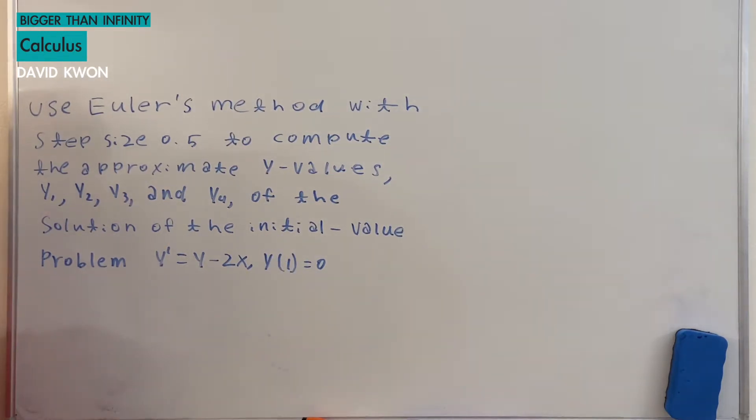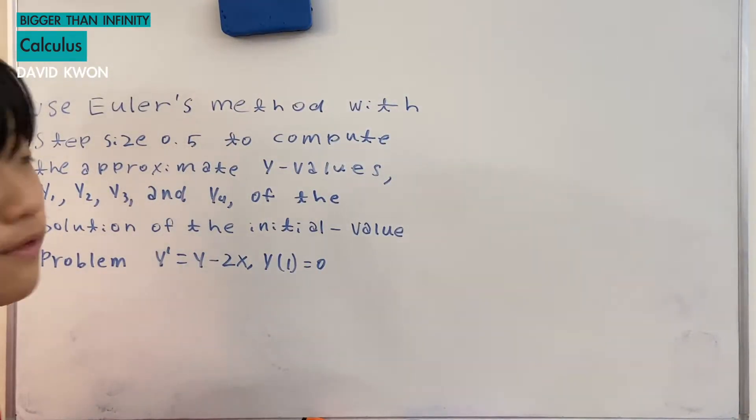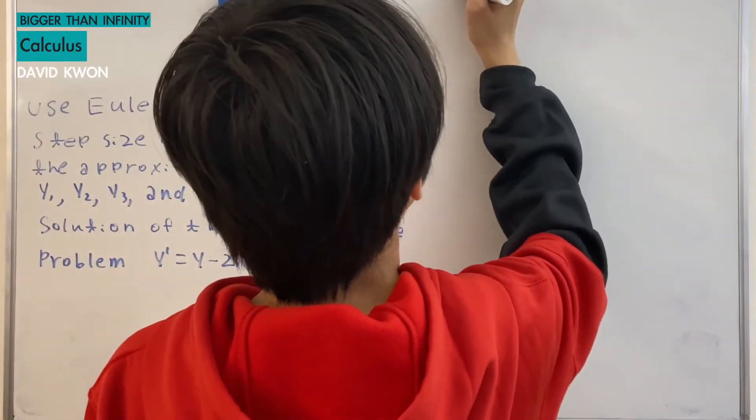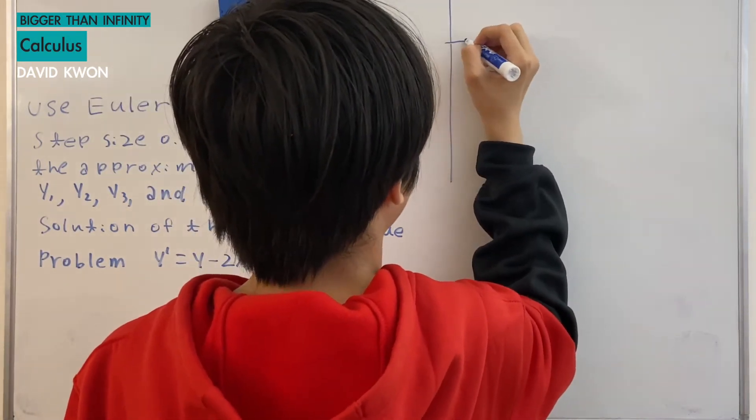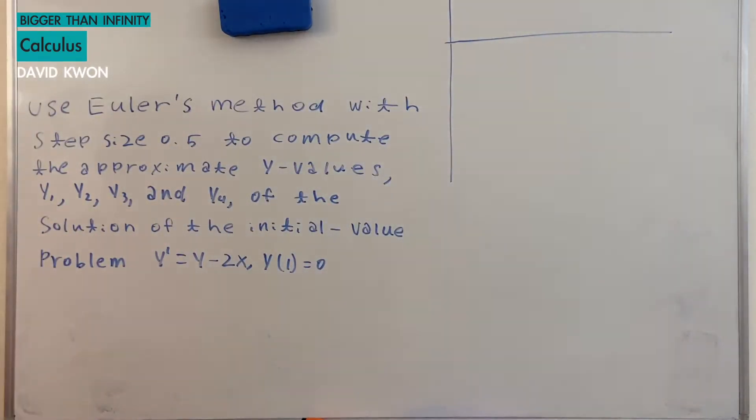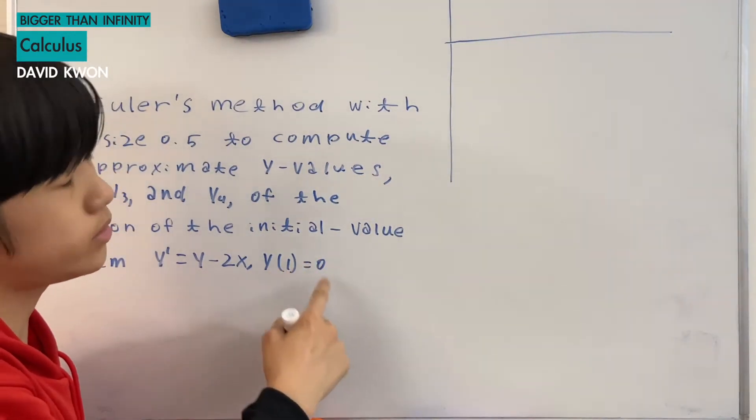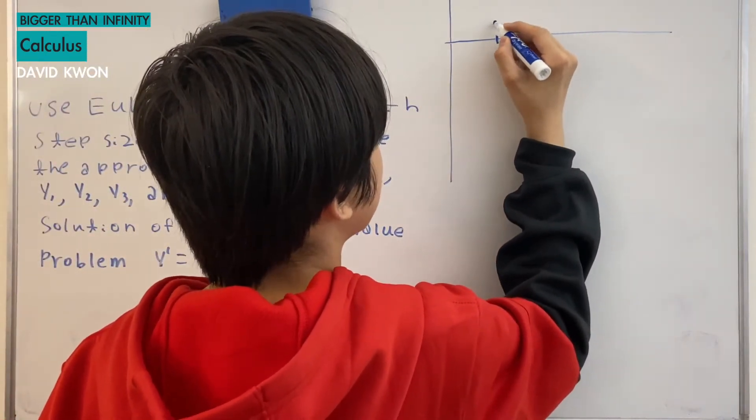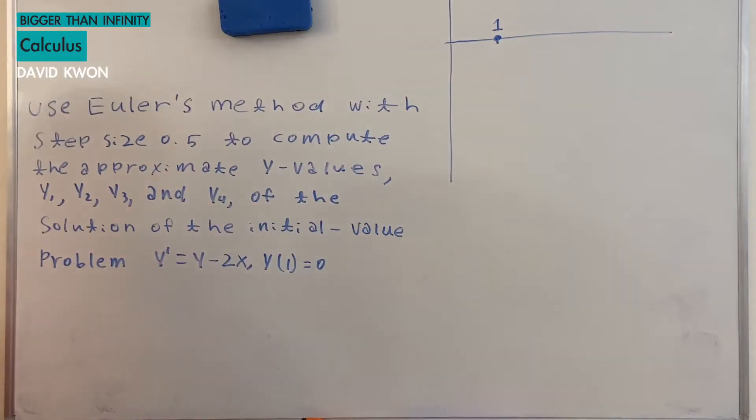Well first to do that I need to draw a graph and bunch of columns. So let's start off with a graph first. We have a graph like this and the initial value starting from x is equal to 1 and y is equal to 0. So let's call this 1. Okay so it starts from here and of the step size 0.5. Okay so what does this mean?